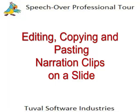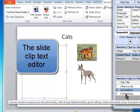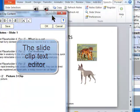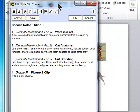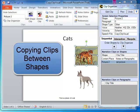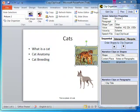The Slide Clip Text Editor is a very useful tool. Launch it with the Notes Editor ribbon button. This editor lets you view and edit the text of all the narration clips on a slide at one time. The clips are displayed in the order they play. The headers refer to the shapes to which the clips are attached. You can use the copy and paste commands on the ribbon to copy and paste a narration clip from one shape to another. A clipboard, called a speechboard, stores the copied clip.